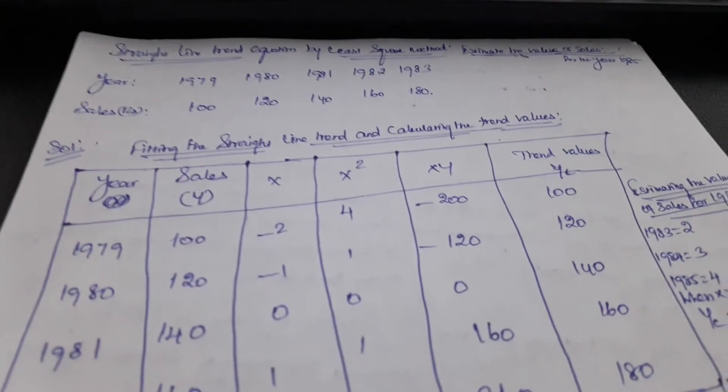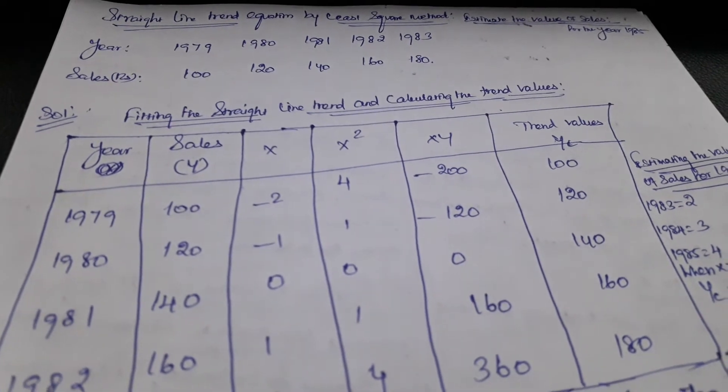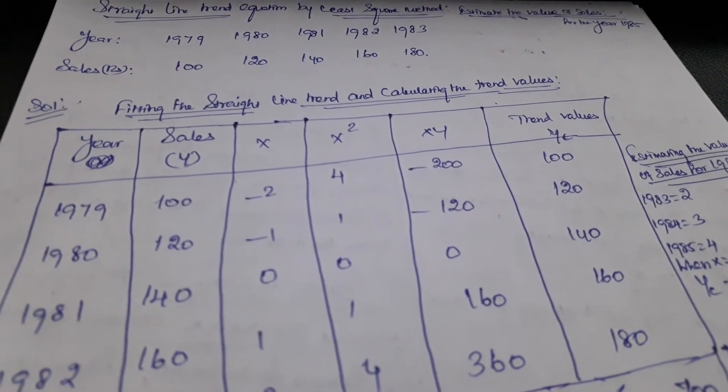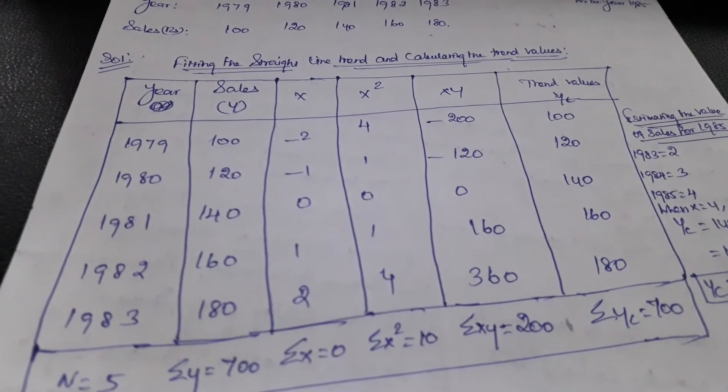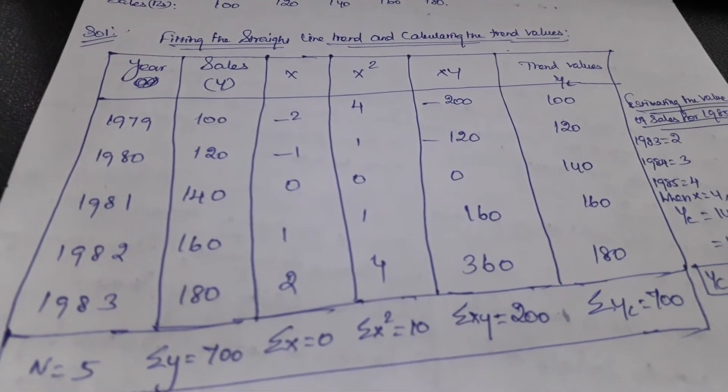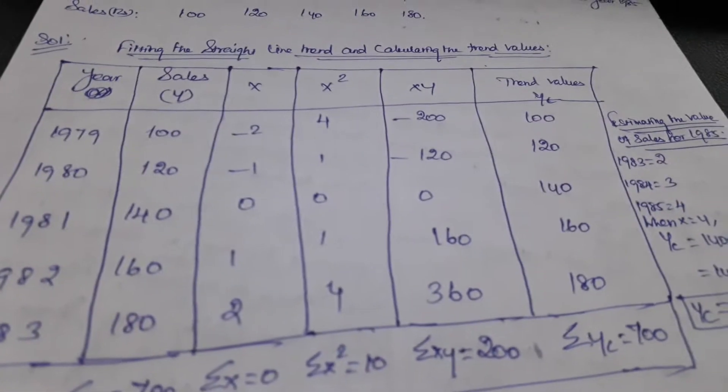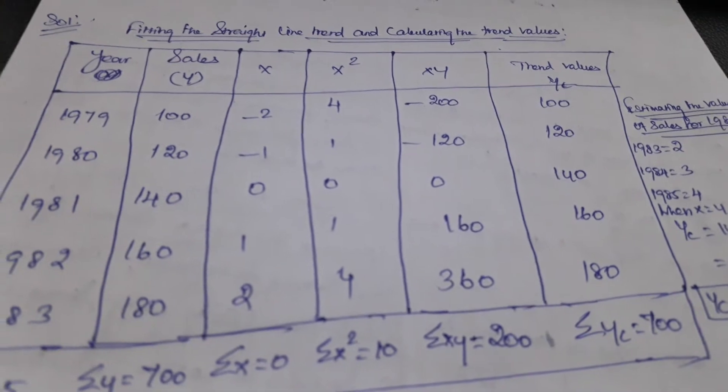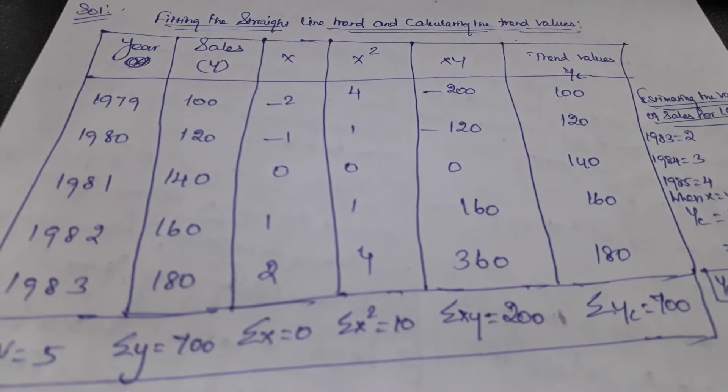Moving forward to how to calculate the trend values. The title would be 'Fitting the Straight Line Trend and Calculating the Trend Values'. The first row is year, the second row is sales which we name as Y, then next is the X row.